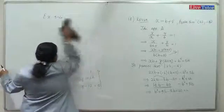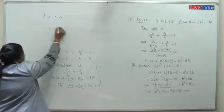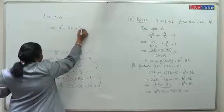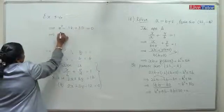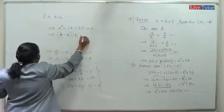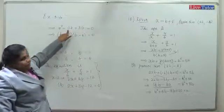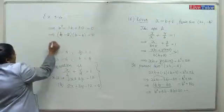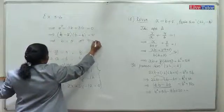Simplifying: b squared minus 11b plus 30 equals 0, which factors as (b minus 5)(b minus 6) equals 0. Since minus 5 plus minus 6 gives minus 11 and their product is 30, this is correct. Therefore b equals 5 or b equals 6.